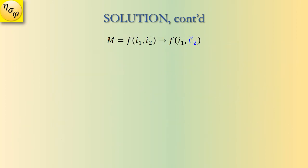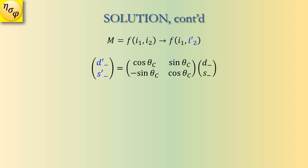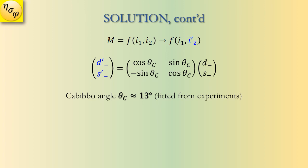We can now use our original general function with the new sets of inputs. The first input i1 doesn't change, but the second input i2 must be converted for some cases, as with d and s. Experiment shows that theta-c is a small angle of 13 degrees, and we call this the Cabibbo angle. As far as we know, we do not know how to obtain this 13 degrees from nature's first principles — we are just happy to obtain this parameter from experimental fitting. It remains a challenge to deduce this 13 degrees from first principles.